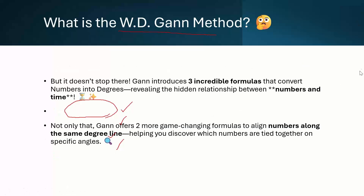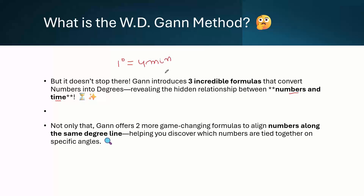Coming to the next part — Gann has given three incredible formulas to convert a number into degrees. This is why it is required: if you convert a number to degrees, you can establish the number and time relationship. Because 1 degree equals 4 minutes, as is known to all of us. So if you convert any number to a degree, you can establish the relationship between the number and time. These are the three formulas he has given based on different geometrical figures.